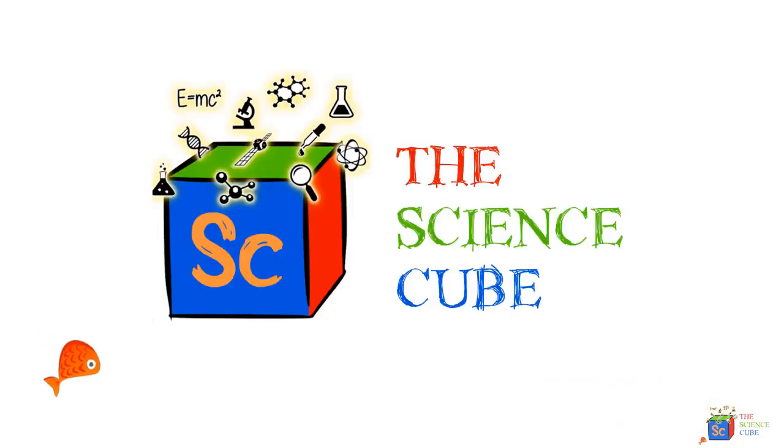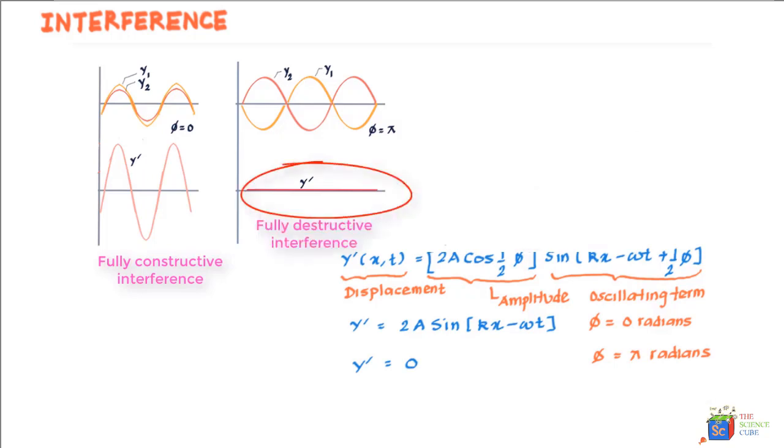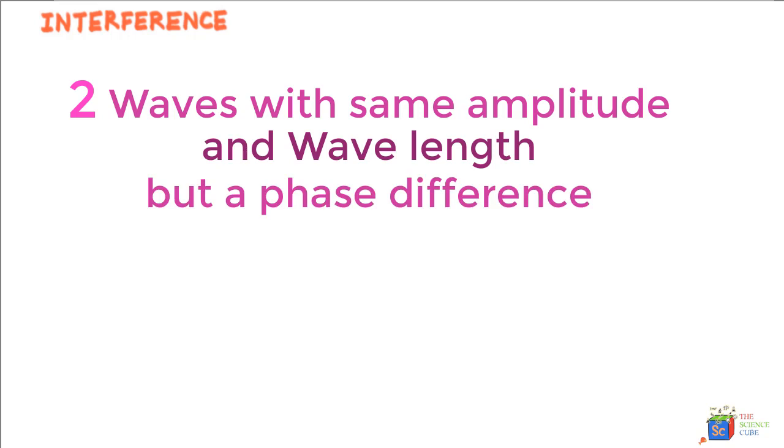Sound waves can undergo interference quite the way transverse waves interfere, and we can write equations for the interference very much like we derived for transverse waves. Let us say there are two sound waves that have the same amplitude and wavelength but a phase difference of φ, and they travel in the positive direction of the x-axis.